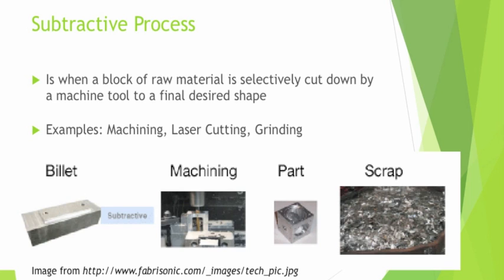Firstly, the subtractive process. Subtractive manufacturing is when a block of raw material — a billet, as you can see from the picture — is selectively cut down by a machine tool, like machining, to achieve a final desired shape. Examples of a subtractive process include machining, laser cutting, and grinding. The image below shows the process: from the billet, which is the raw material, it is subtractively machined down into the final desired shape, and all the other material that got machined away becomes scrap material.